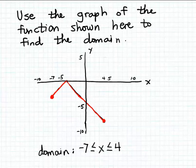So we can use inputs x that are greater than or equal to minus 7 but at the same time less than or equal to positive 4.